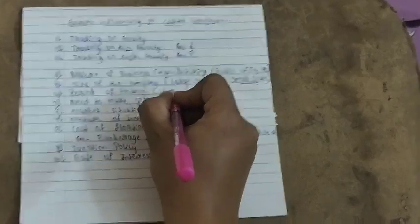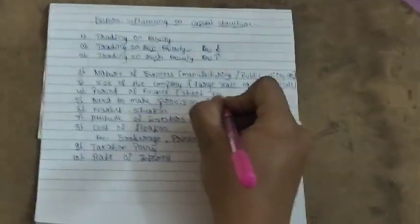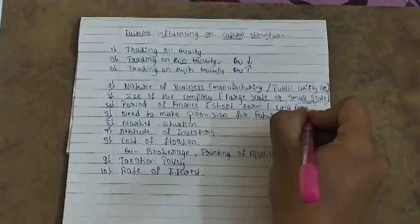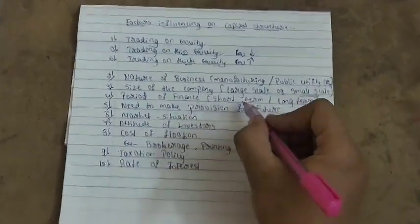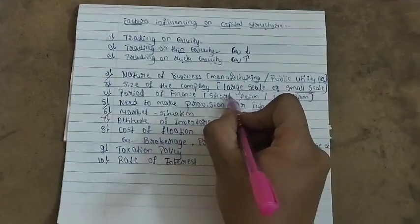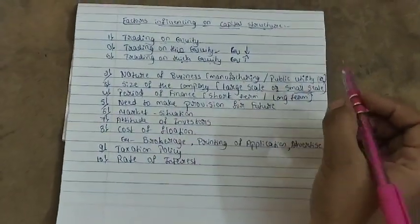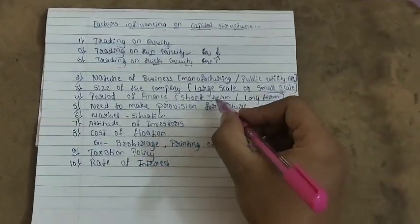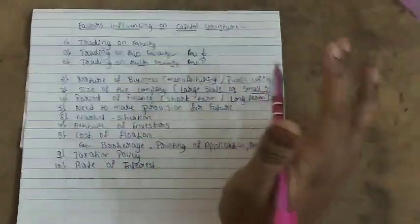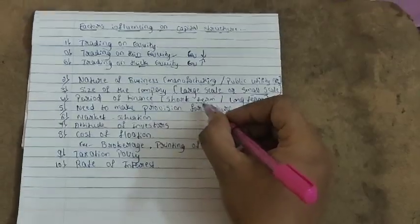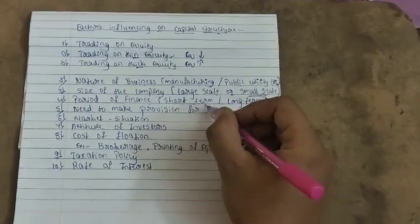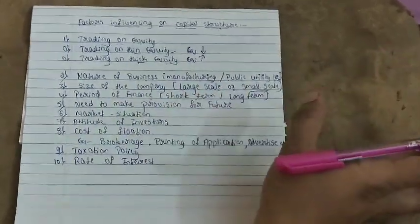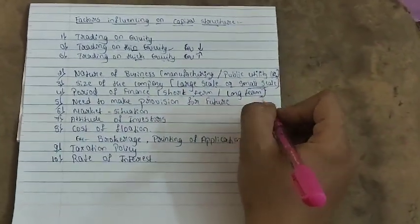For small scale units with more chances of making profit, safe investment through preference shares or debentures is better. The purchase power or financial standing of the company is also one important factor influencing the capital structure.